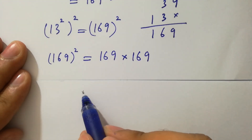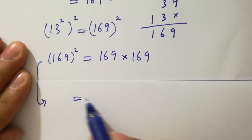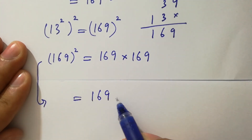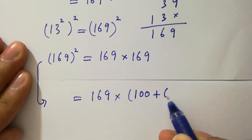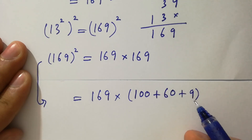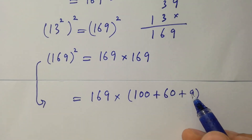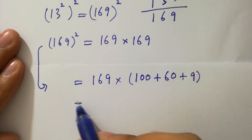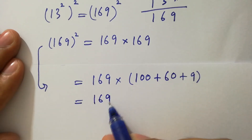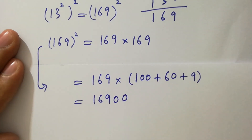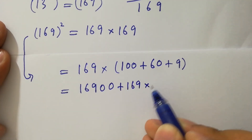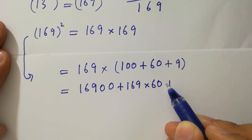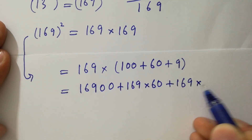169 times 169 can be written as 169 times 100 plus 63 plus 9, which gives us 169 times 100, plus 169 times 60, plus 169 times 9.